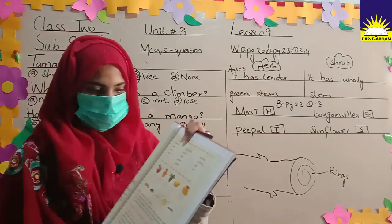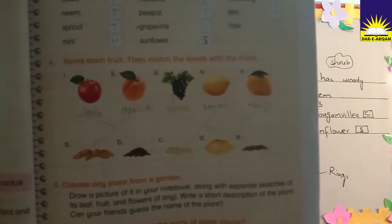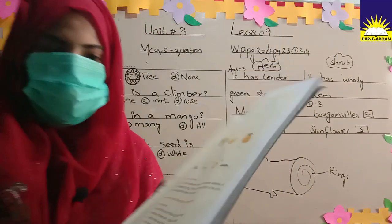Question four on page 23: write the name of each fruit and then match the seeds with the fruits. Name each fruit and match the seeds — apple with its seeds, apricot with its seeds, and grape with its seeds. Match the seeds to the correct fruit.